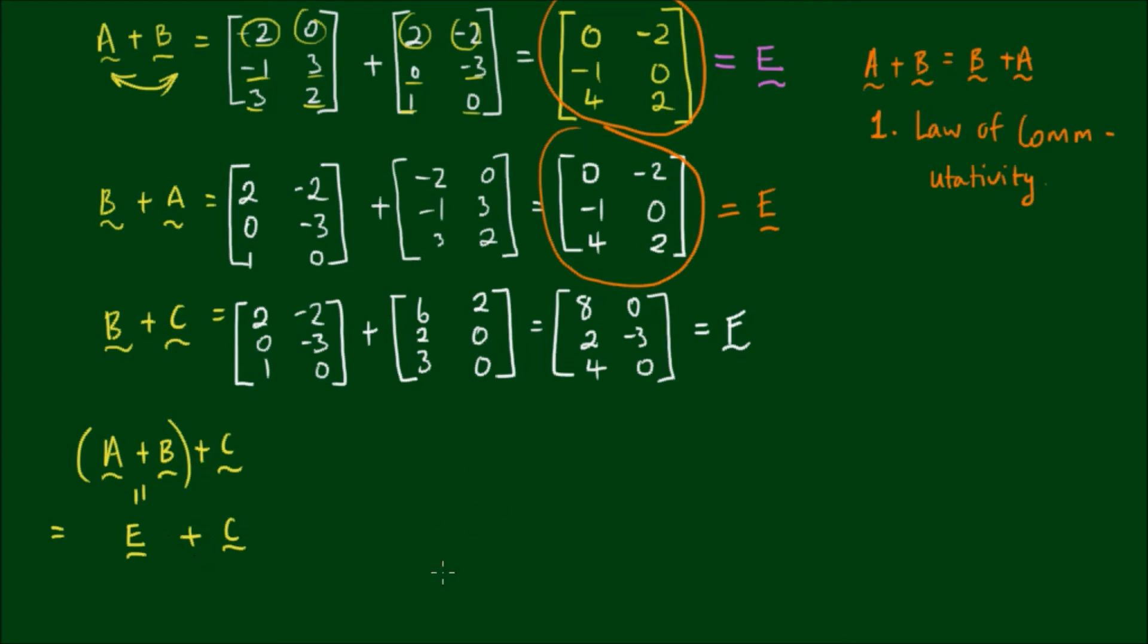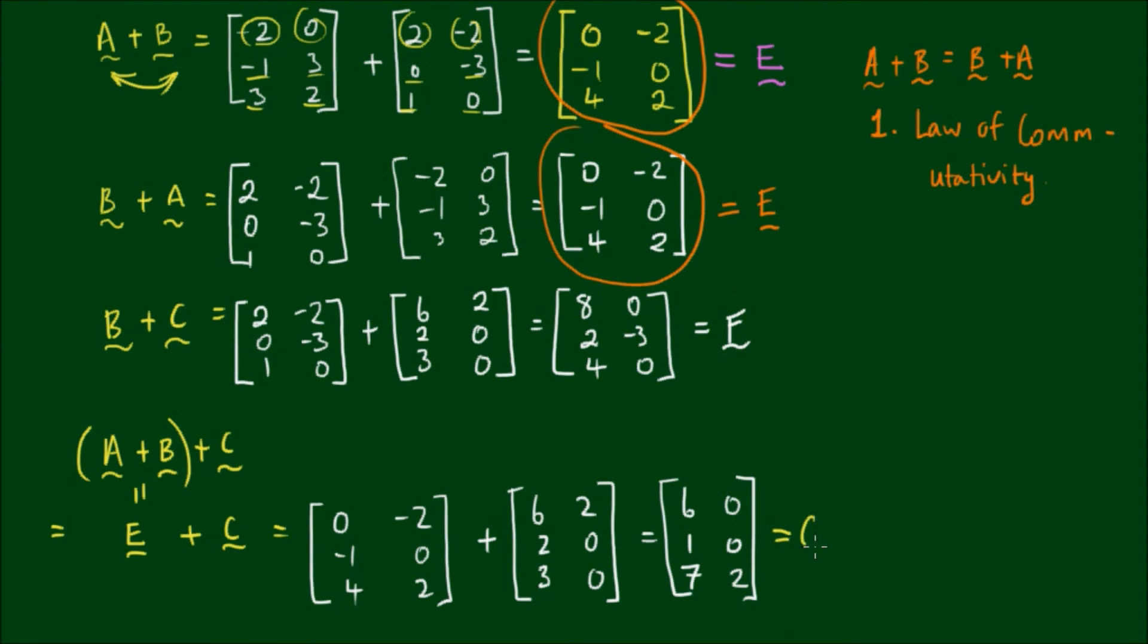So we are really adding matrix E and matrix C. So here we have 0 plus 6 equals 6. Negative 2 plus 2 equals 0. Negative 1 plus 2 equals 1. 0 plus 0 equals 0. 4 plus 3 equals 7, and 2 plus 0 equals 2. Let's call this matrix G.